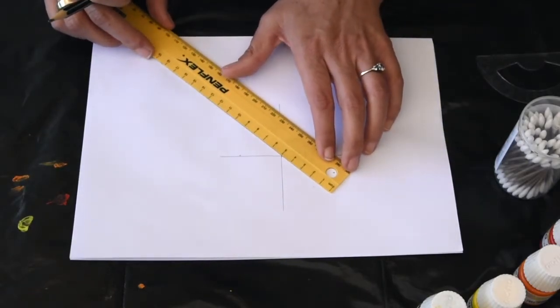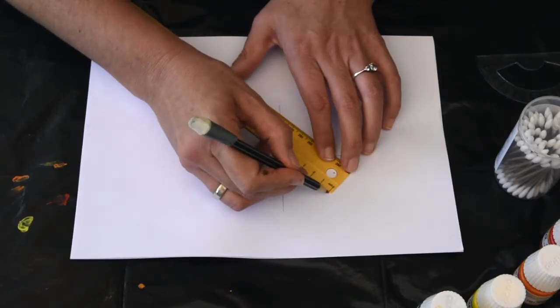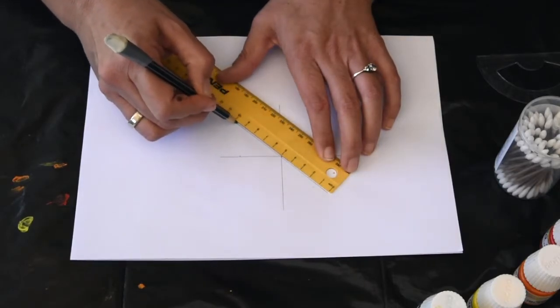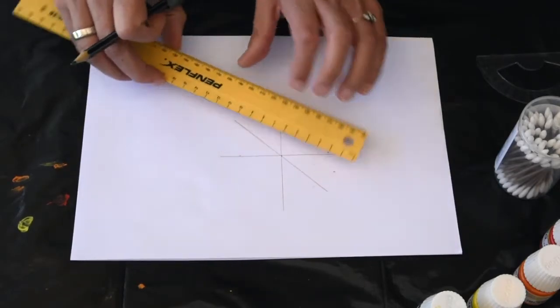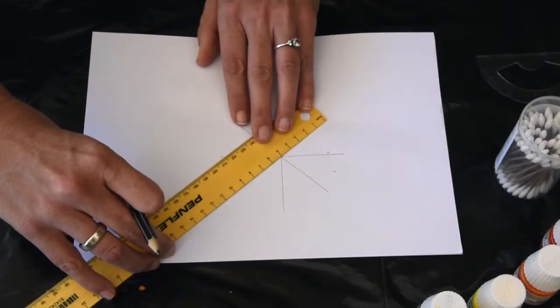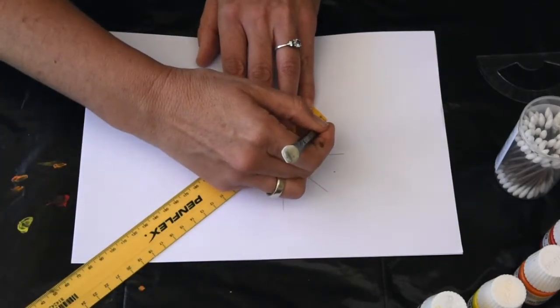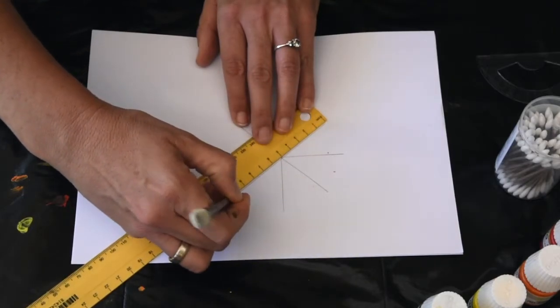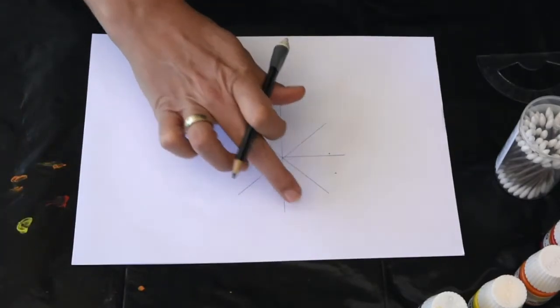Then we're going to put our 5 in the middle again. And we're going to do it again on this side. Can you see what I've done? I've divided this.